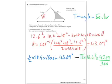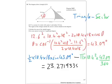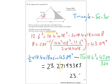Stick that all in your calculator, you end up with 23.27193383. And now rounding to three significant figures, we get 23.3 centimetres squared.